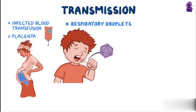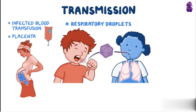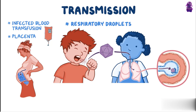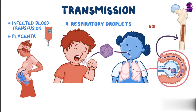Although the virus first enters cells through the respiratory tract by binding to receptors on host cells, it does not replicate in them. Instead, it keeps traveling through cells and into the circulatory system until it reaches the bone marrow, where red blood cells are made — a process called erythropoiesis.